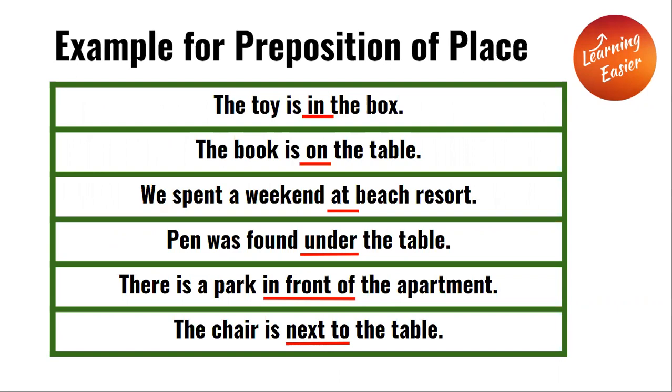The book is on the table. "On" is the preposition of place in the sentence.